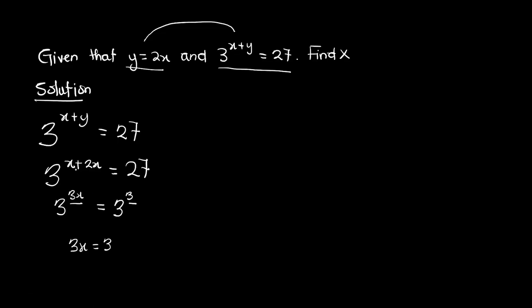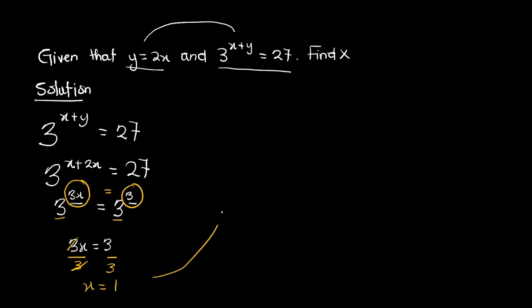What I'm equating are the powers, not the bases. The bases are 3 and 3. So we equate the exponents: 3x equals 3. Dividing both sides by 3, x equals 1. To prove our answer is correct, we substitute back in: 3 raised to the power x plus 2x equals 27, with x equal to 1.